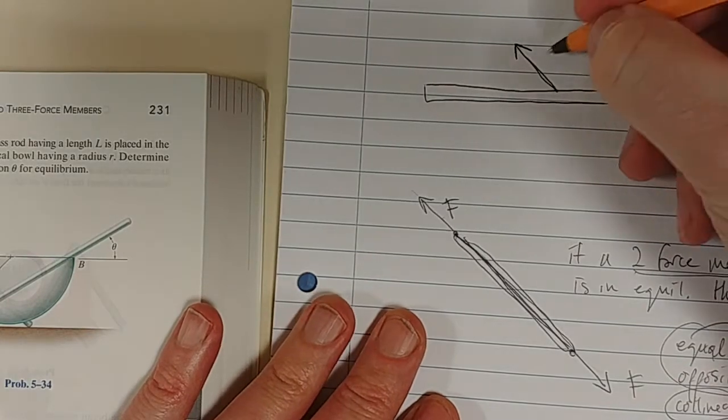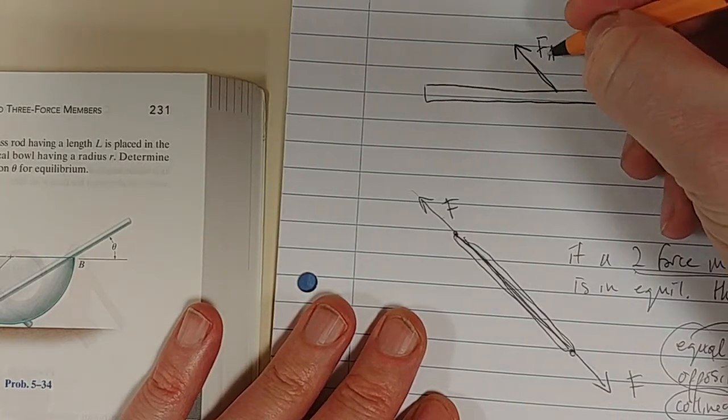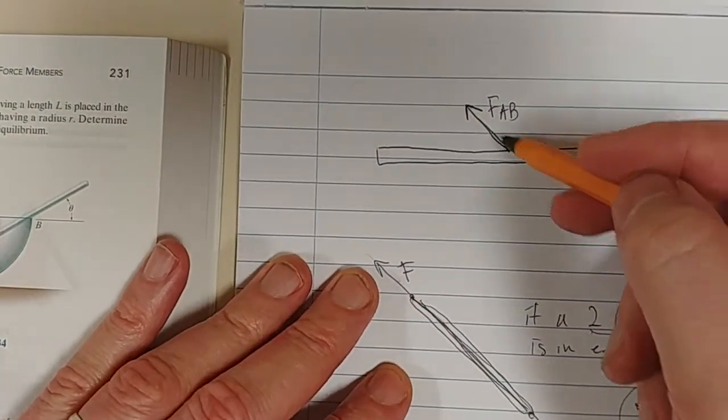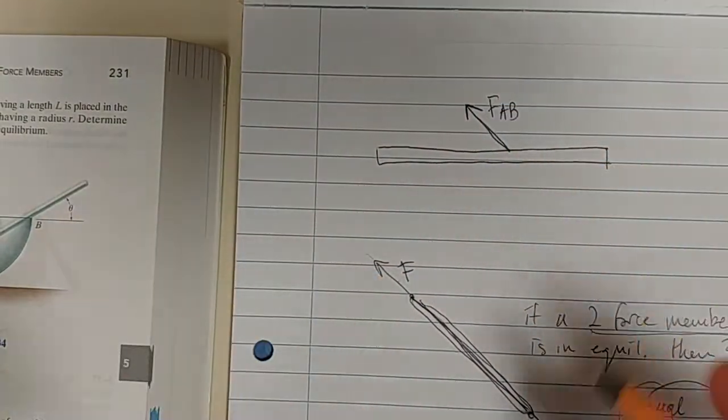The point I'm trying to make is we know the direction of that force. The direction of that force FAB, which is along that rod, or the direction of that force AB is directed along that rod.